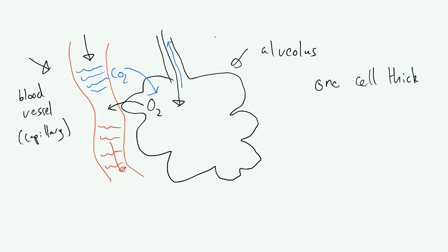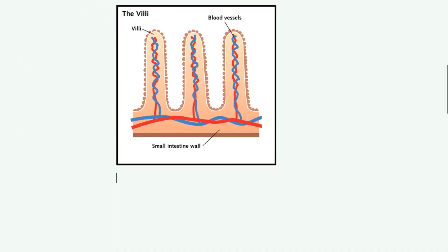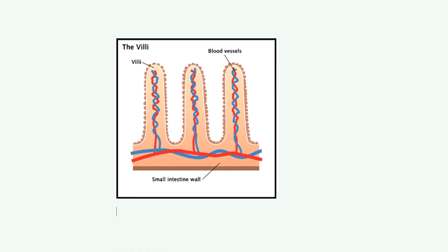Lastly, let's look at the small intestine, which is also adapted for exchange of substances. We want to get products of digestion into our blood from the small intestine — to absorb things from our food. What we have are these projections called villi, singular villus, which greatly increase the surface area for exchange of substances. You'll notice there are capillaries — red and blue blood vessels — running through them, so you have a good blood supply just like in the lungs. The high surface area and the good blood supply means you can maintain a concentration gradient of substances, and the higher surface area means faster diffusion.